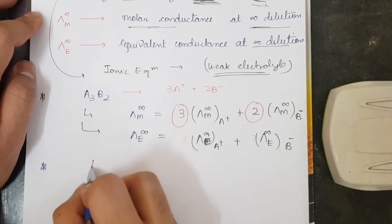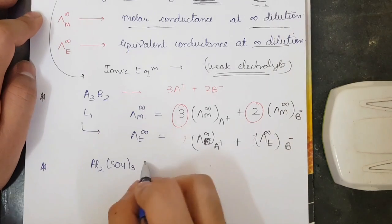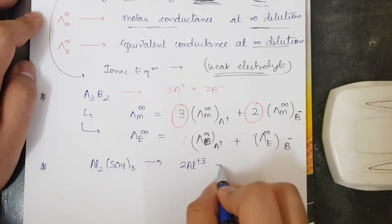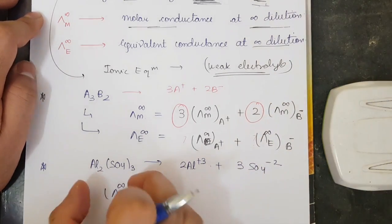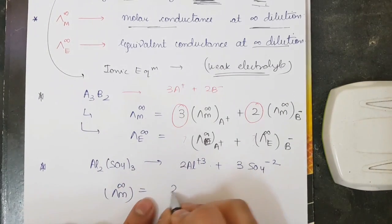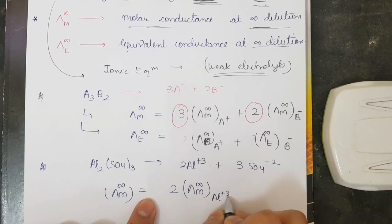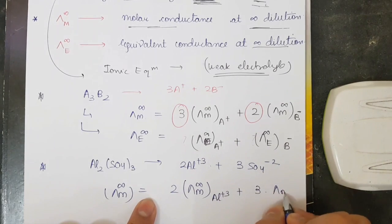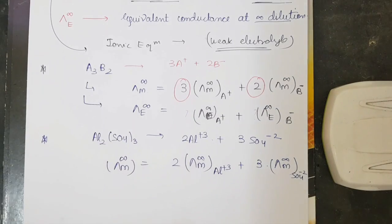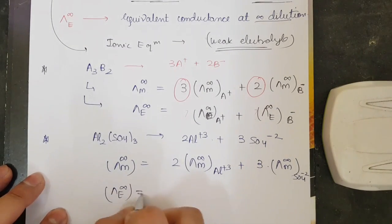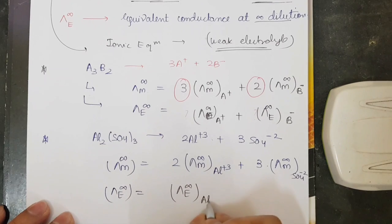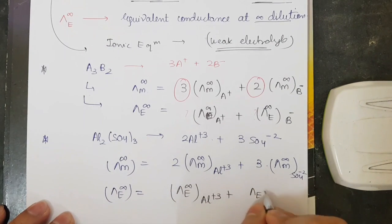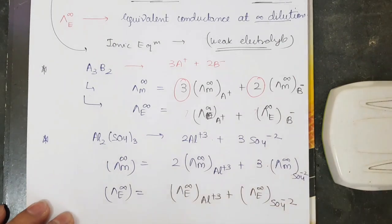Let's take the example of Al2(SO4)3. It breaks down as 2Al³⁺ + 3SO4²⁻. So λm∞ of Al2(SO4)3 = 2 × λm∞(Al³⁺) + 3 × λm∞(SO4²⁻). But if we were writing λe∞ for this compound, then the 2 and 3 do not come into consideration, and the answer would simply be λe∞(Al³⁺) + λe∞(SO4²⁻). I hope this point is now clear.